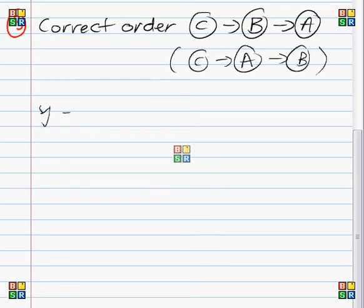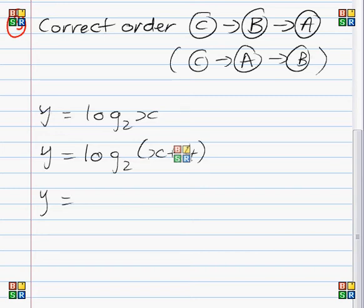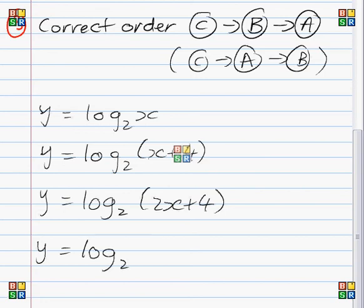In other words, the graphs that we're going to be drawing are log to the base 2 of x, then log to the base 2 of x plus 4, because remember, transformation C was left by 4. Then we're going to be drawing log to the base 2 of 2x plus 4, and then we're going to be doing log to the base 2 of minus 2x plus 4. This is really important to write this down first before you start to draw the graphs, because otherwise, you'll do the transformations in the wrong order, and you'll get it wrong. So let's move on now, and draw these graphs.